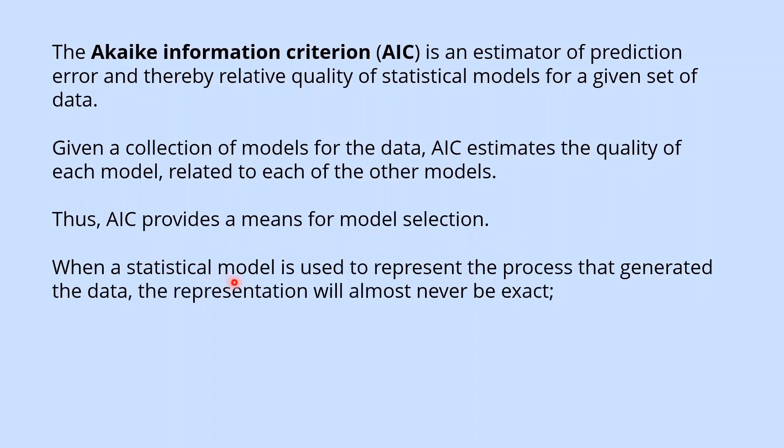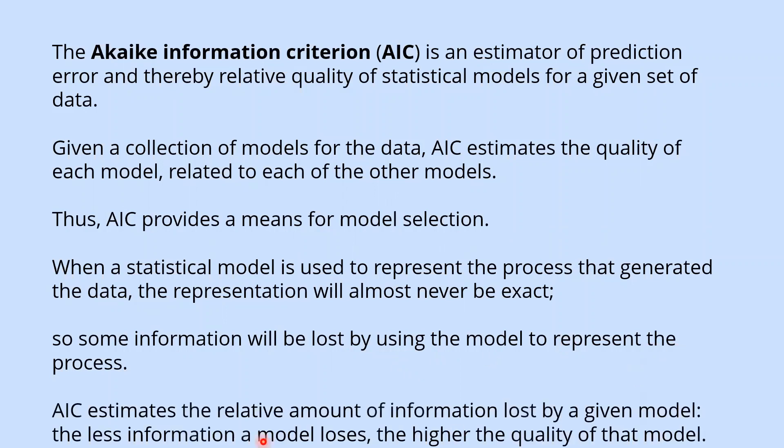When a statistical model is used to represent the process that generated the data, the representation will almost never be exact. So some information will be lost by using the model to represent the process. AIC estimates the relative amount of information lost by a given model. The less information a model loses, the higher the quality of that model.